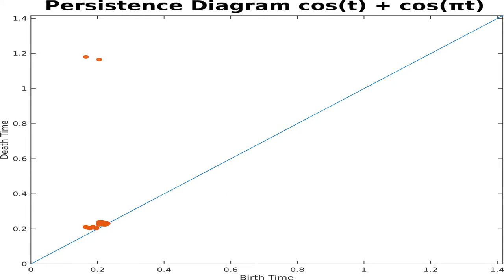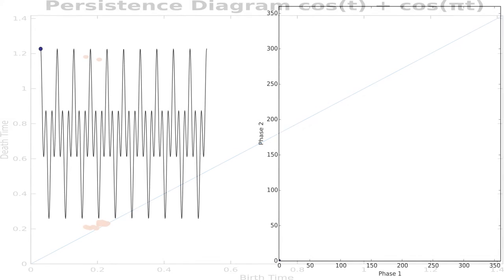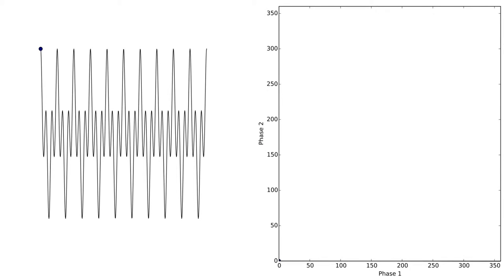Indeed, the persistence diagram indicates two highly persistent 1D classes with early birth times. What exactly is going on here? One way of explaining the difference is to look at the principal square of the two torus and to plot the phase of one sinusoid on the x-axis and a phase of the other sinusoid on the y-axis.